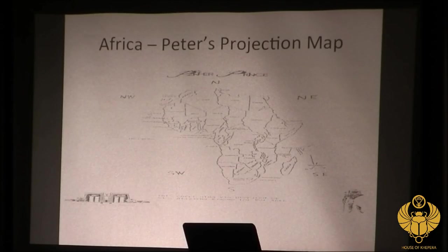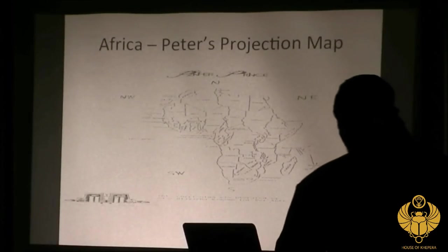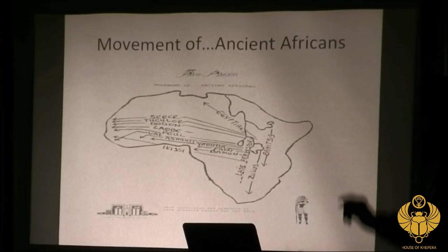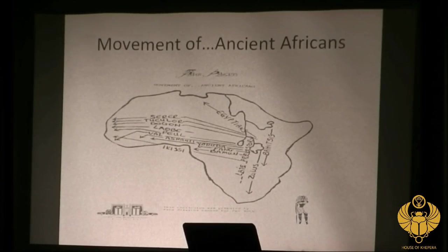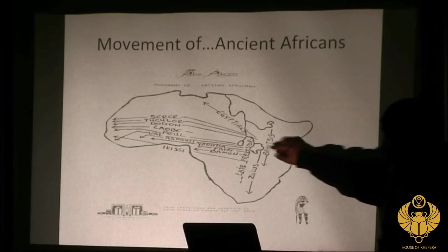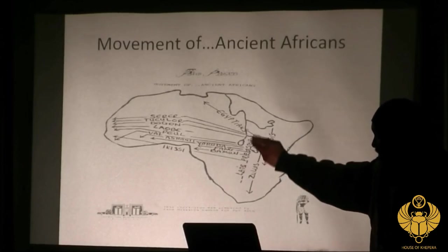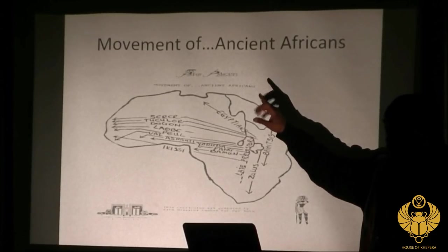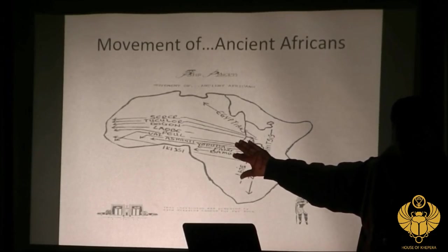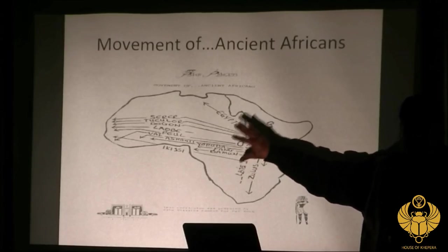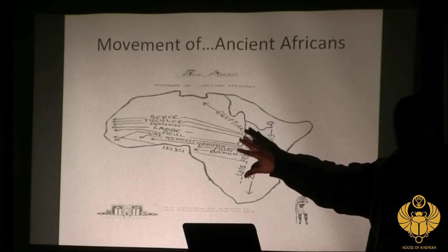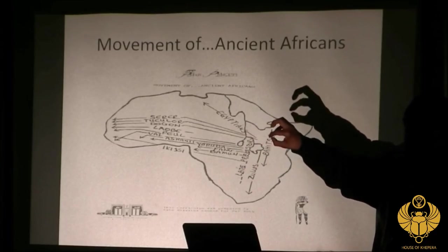Another form of the Peters projection map shows the various countries, which have been existing before 1885 and the World Conference. Here is the movement of Africans traveling up out of this area into other parts. This is where they're from — remember Pangaea, and remember this is where the sun was shining brightest on top of that hill.